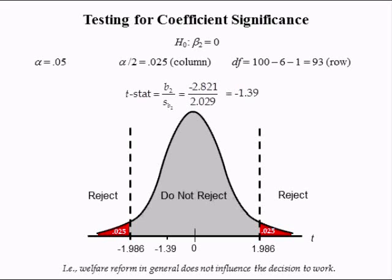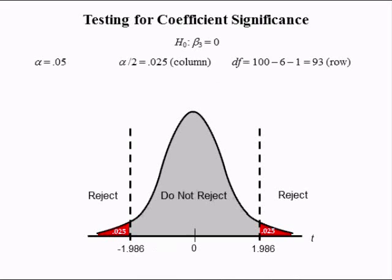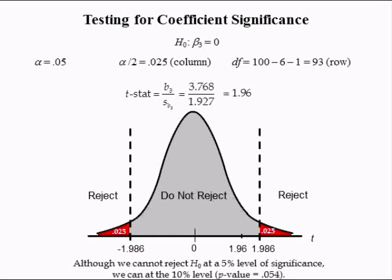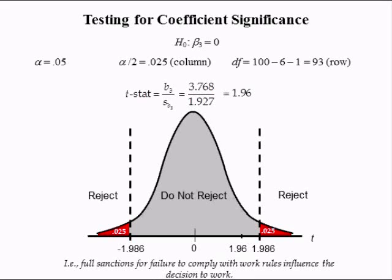Welfare reform in general does not influence the decision to work. The third T-test has a null hypothesis of beta 3 equal to 0. The T-stat for the third variable is B3 divided by its standard error, which is 3.768 divided by 1.927, equal to 1.96. Now, 1.96 is really close to the upper T-critical value of 1.986. Although we cannot reject the null at the 5% level of significance, we can reject it at the 10% level because its p-value was 0.054. Hence, the full sanction policy is not highly significant, but it is significant.